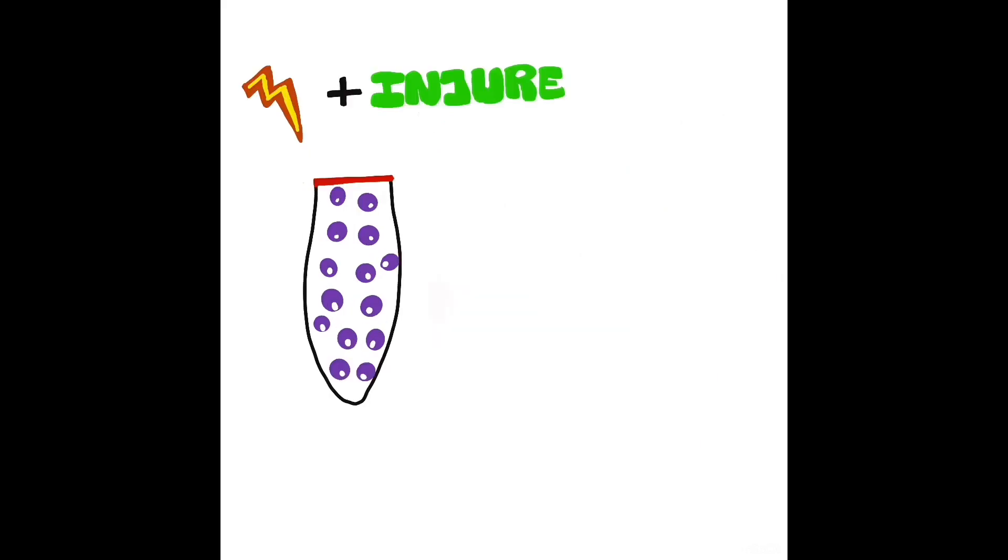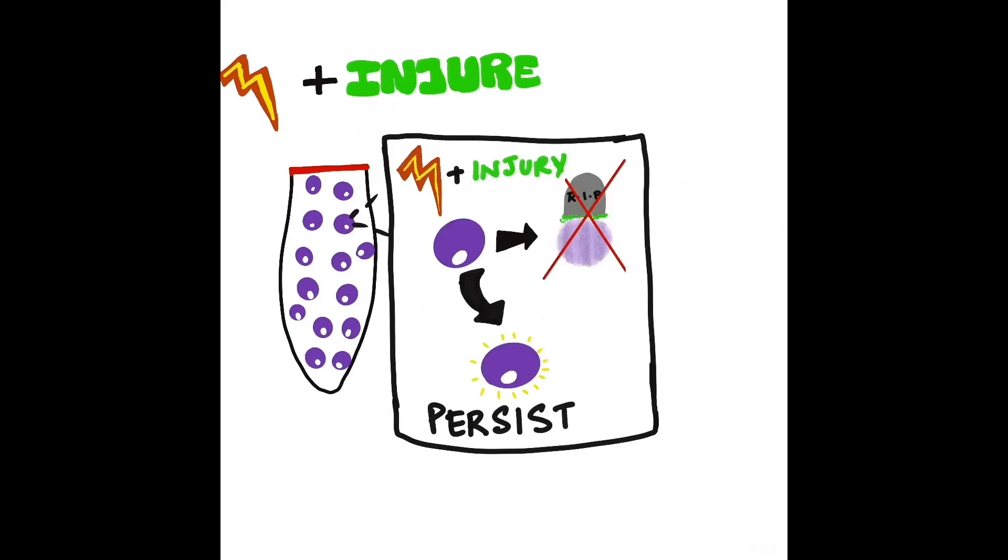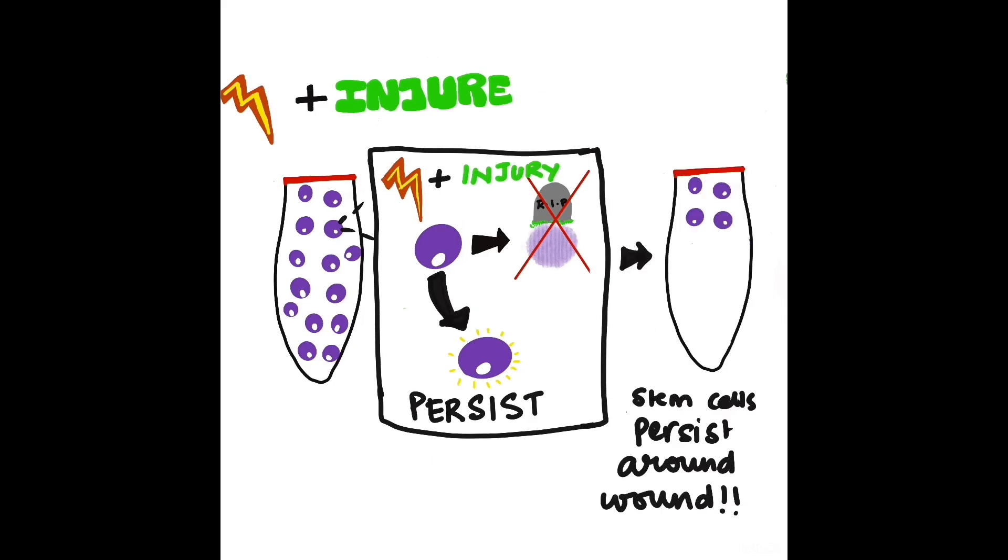We found, however, that if you pair radiation with injury, stem cells that would otherwise die now persist, resulting in an animal with a number of cells that are present around the wound site.